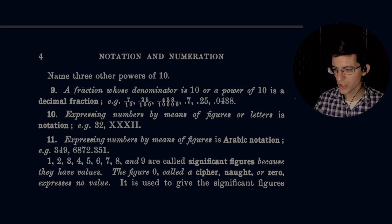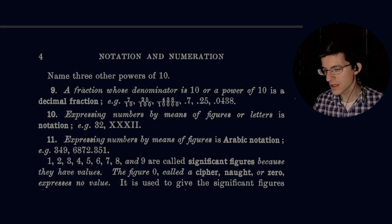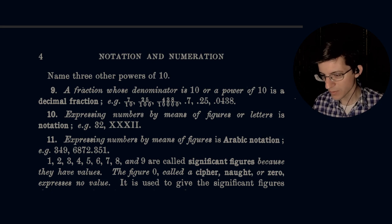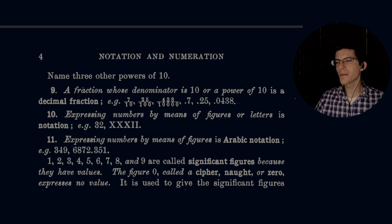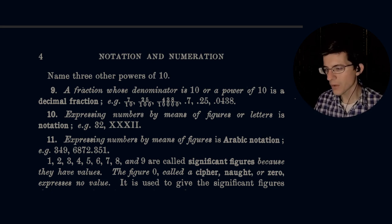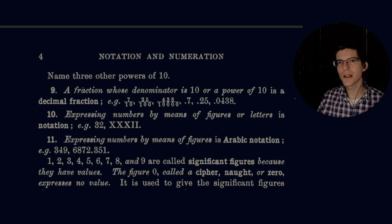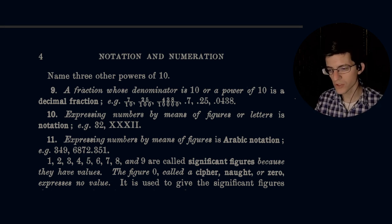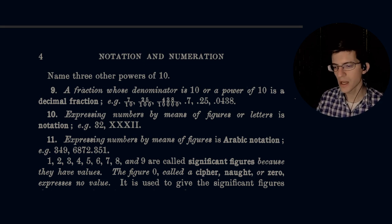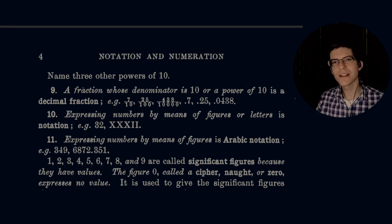Number nine: a fraction whose denominator is 10 or a power of 10 is a decimal fraction. So anytime you have the integer 10 subdivided, that is going to be called a decimal fraction. It's built into the name, deci is 10, decimal fraction.